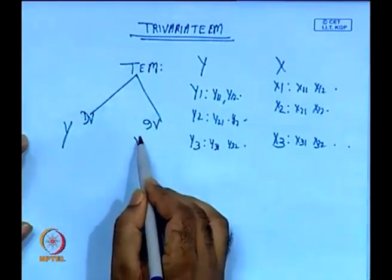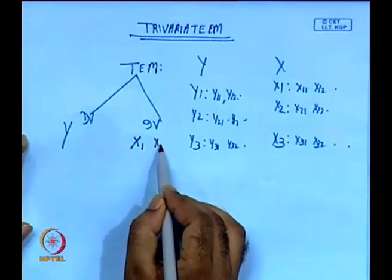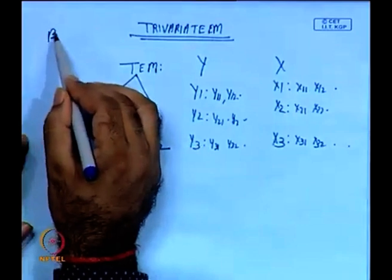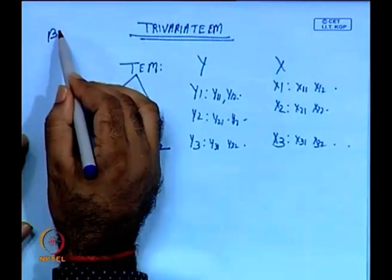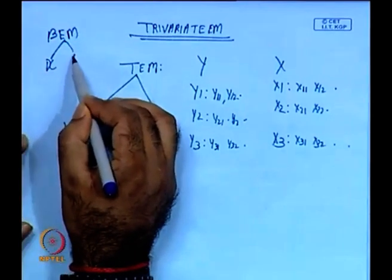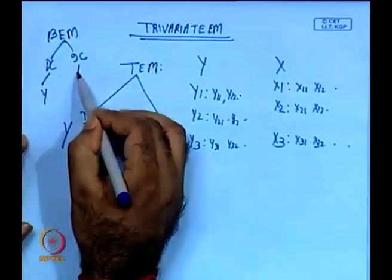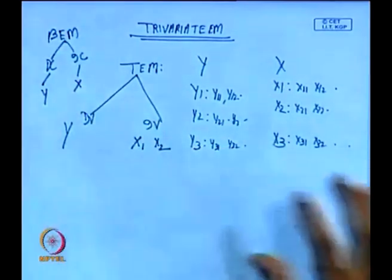This is one dependent variable at a time. We integrate y with several independent variables. In the independent variable structure, since it is trivariate, we take two independent variables x1 and x2. In bivariate econometric modelling the dependent classification is y and the independent classification is x — there is no x1 or x2 because there is only one dependent and one independent variable.